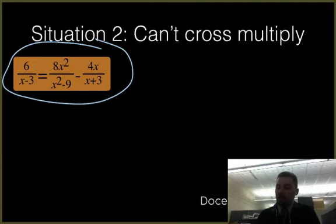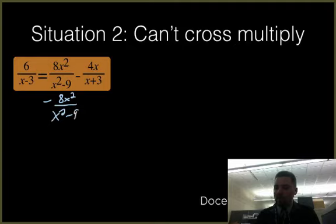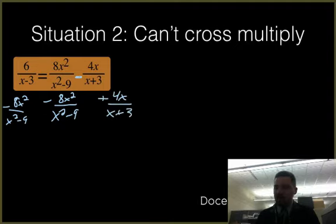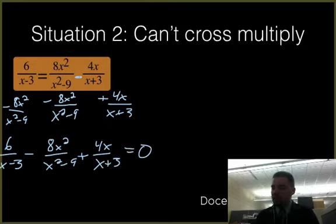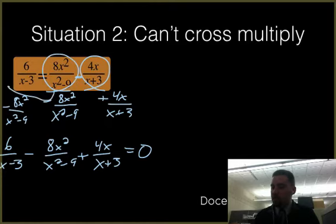So to set this equal to 0, I'm going to move everything on the right to the left-hand side. So I will subtract 8x squared over (x squared minus 9) from both sides. And then I'm going to add 4x over (x plus 3) to both sides of the equal sign. So when everything shakes out and settles down here, we're going to have 6 over (x minus 3) minus 8x squared over (x squared minus 9) plus 4x over (x plus 3) all equal to 0. So I took these two expressions here and I moved them to the left-hand side of the equation.